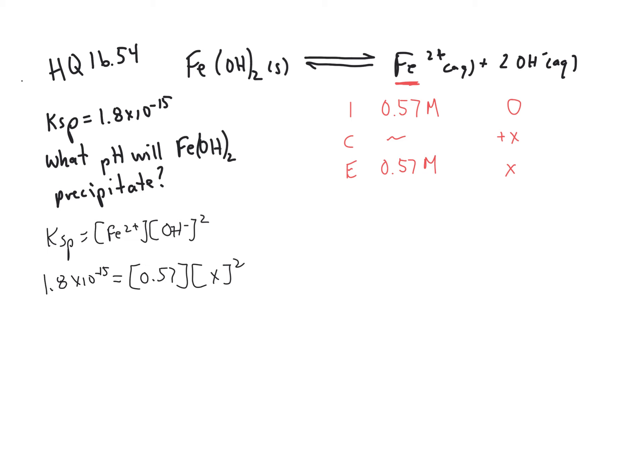And we get x squared. So this is step 1. x squared equals about 3.16 times 10 to the minus 15. We want to find x because x is our hydroxide concentration. So take the square root of both sides, and x, which is our hydroxide concentration, comes out to be about 5.62 times 10 to the minus 8 molar.